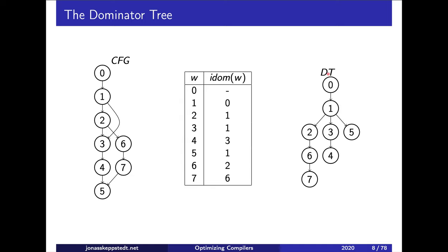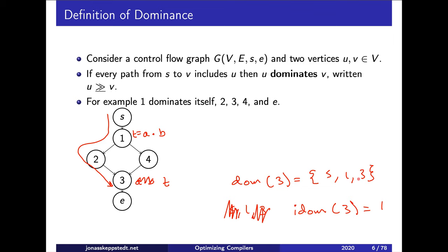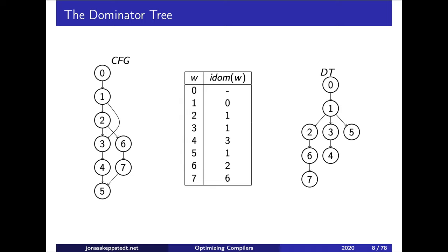What we actually do when constructing the dominator tree is not to first find the dominance sets — that is a really bad and slow way to compute it. Instead we compute the dominator tree directly first. Then for any vertex, say node 7, the dominating set dom(7) consists of node 7 and all its ancestors going up in the dominator tree.